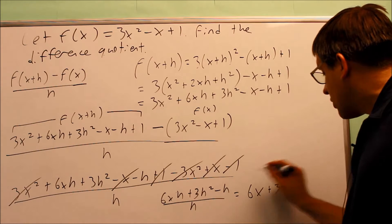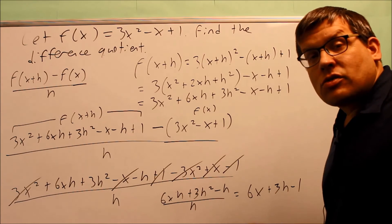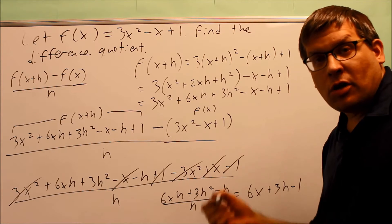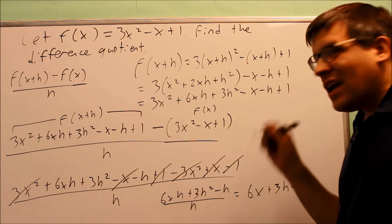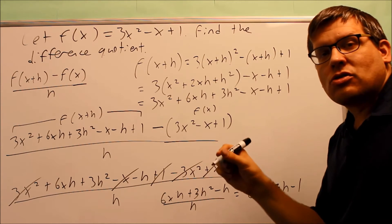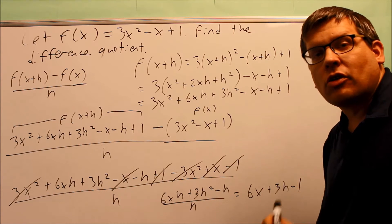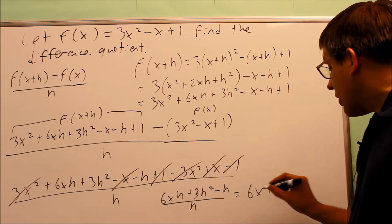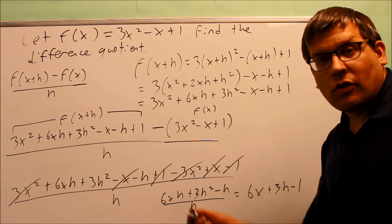So remember what we're doing here. This represents a slope. So if you're going on to calculus, you'll be learning something called a limit. And that means that the h represents the distance you are from one point to the other. So if that h ends up going to 0, you'd end up with 6x minus 1, and that would be called a derivative.